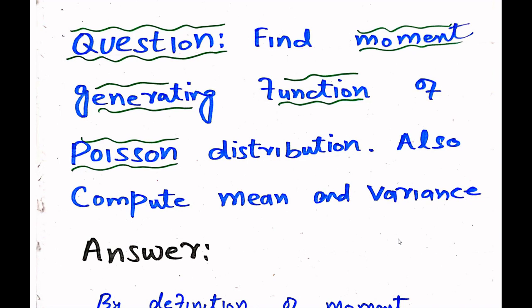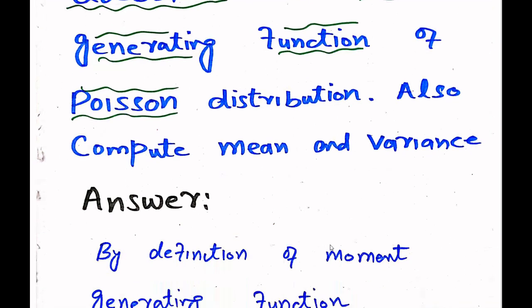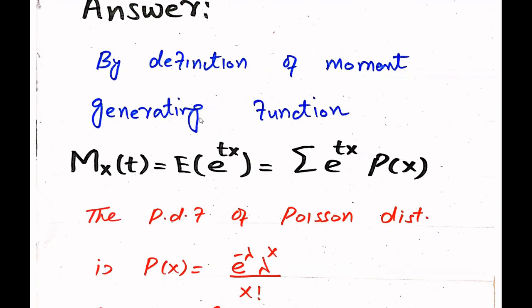By definition, the moment generating function is represented by M_x(t), and it is equal to the expected value of e^(tx). When we expand the expectation, it is equal to the sum of e^(tx) · p(x), where p(x) is the probability mass function. The summation sign is used because the Poisson distribution belongs to the discrete family.